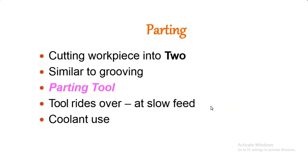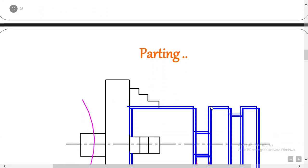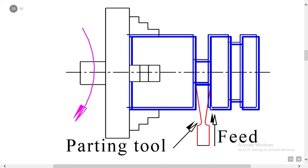Next operation — parting. Parting means cutting the workpiece in two, similar to grooving. A parting tool is used here. The parting tool operates at slow speed. Coolant is used — not only for parting, but for any operation we use coolant to reduce heat. For each individual operation we select a different type of suitable tool.